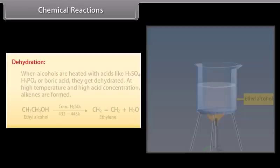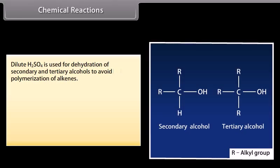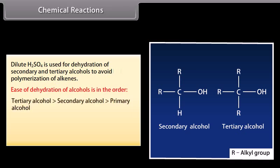Dehydration: when alcohols are heated with acids like sulfuric acid, phosphoric acid or boric acid, they get dehydrated. At high temperature and high acid concentration, alkenes are formed. Dilute sulfuric acid is used for dehydration of secondary and tertiary alcohols to avoid polymerization of alkenes. Ease of dehydration of alcohols is in the order: tertiary alcohol, followed by secondary alcohol, and then primary alcohol.